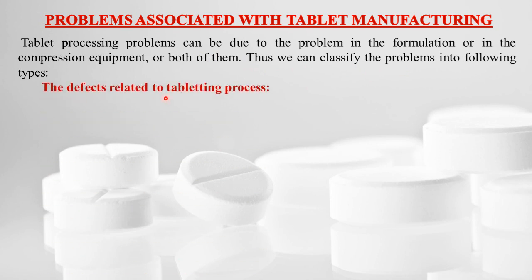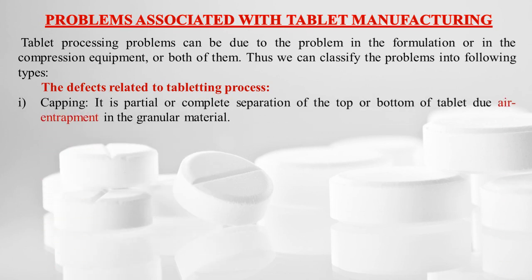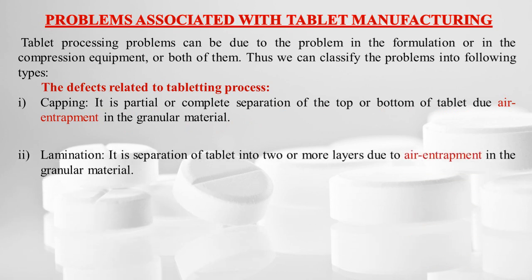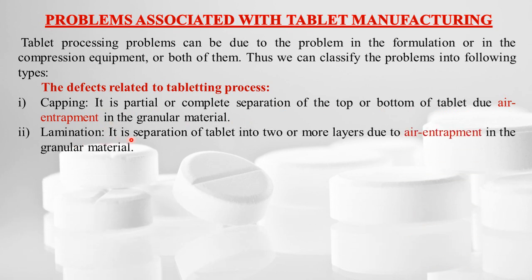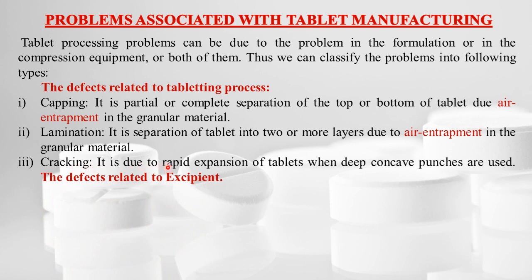We can classify the problems into the following types. First is defects related to the tableting process: capping — partial or complete separation of the top or bottom of the tablet; lamination — separation of tablets into two or more layers due to air entrapment; and cracking — due to rapid expansion of the tablets when deep concave punches are used.